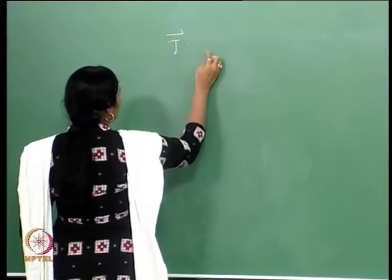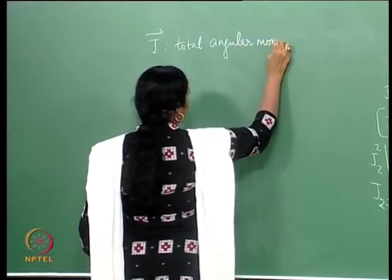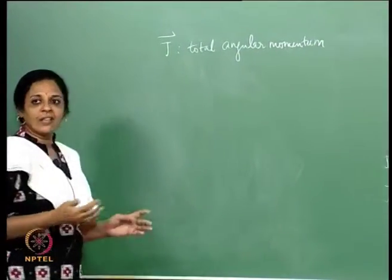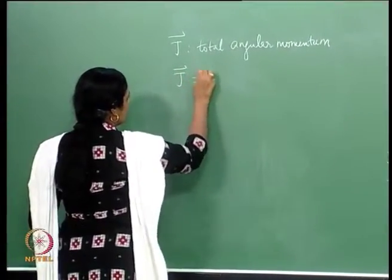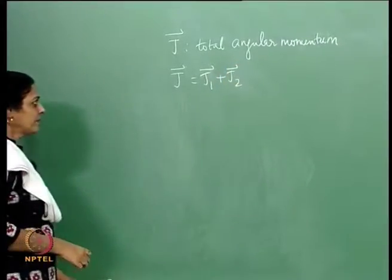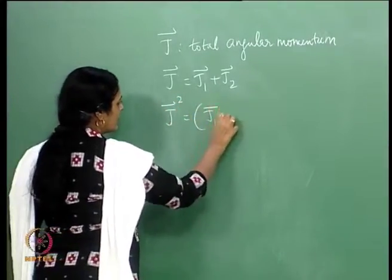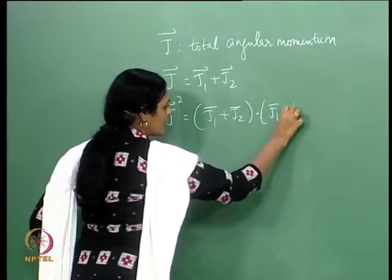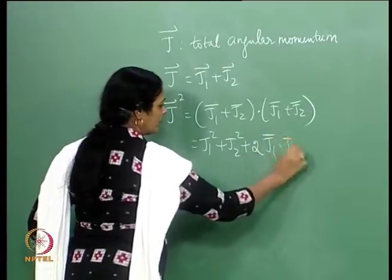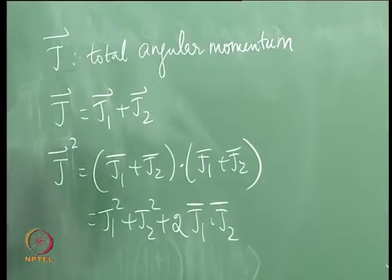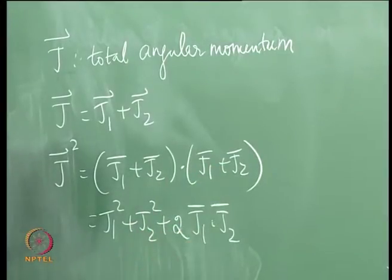Therefore, it would be more sensible to look at the composite system in terms of the total angular momentum and its third component. If I talk about the total angular momentum J of the composite system, it should behave like any angular momentum — like a vector under rotations. Therefore, like all vectors, the total angular momentum follows vector addition: J = j1 + j2, so J squared = (j1 + j2)·(j1 + j2), which gives a cross term 2 j1·j2.